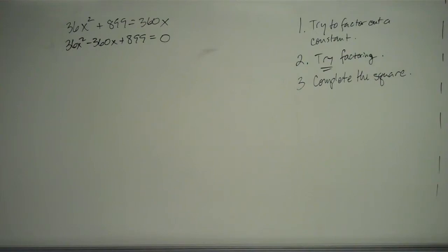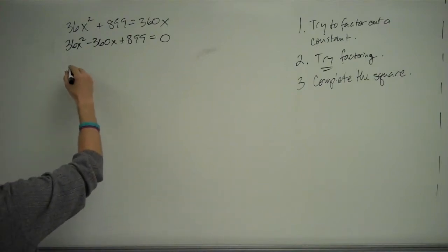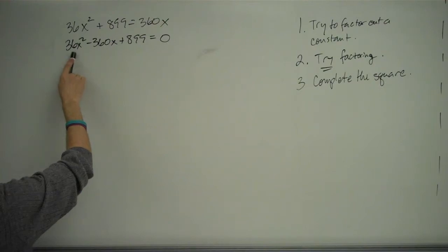So I think we just need to go straight to completing the square. When you complete the square, first thing you've got to do is divide everything by your leading coefficient here. So we're going to get x squared.